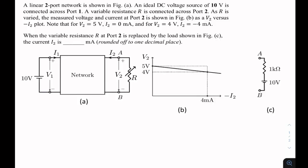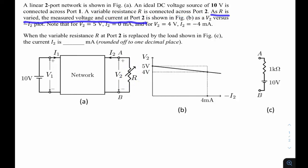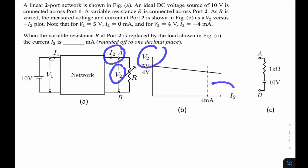This question is from GATE 22 electronics, network subjects, theorem topic including fundamental theorem. A linear two-port network is shown in figure a. An ideal DC voltage source of 10 volts is connected across port 1, a variable resistance R is connected across port 2. As R is varied, the measured voltage at port 2 is shown in figure b as a V2 versus minus I2 plot.